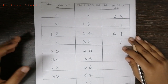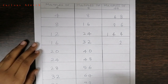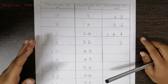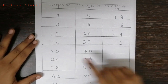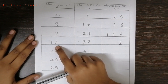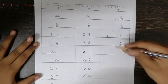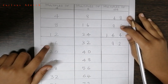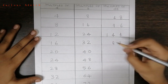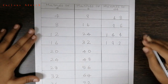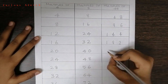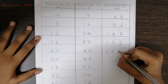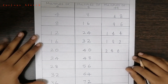Then we'll add the tens digit of the right side number, which is 3, with the ones digit of the left side number — 6 plus 3 is 9, and we'll write this 1 as it is — giving us 192. So the next one is 240.